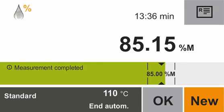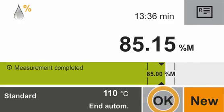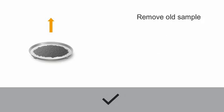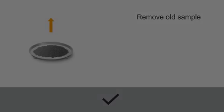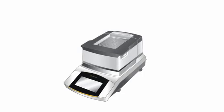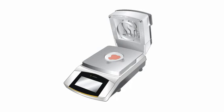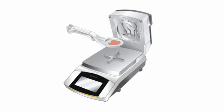Removing the sample. Confirm the completion of the measurement by tapping OK. In the display, you are now asked to remove the old sample. To do so, please open the hood and remove the sample pan. As the sample pan will be warm, you should use the sample tong for this process. You can discard the sample pan after it has cooled down.